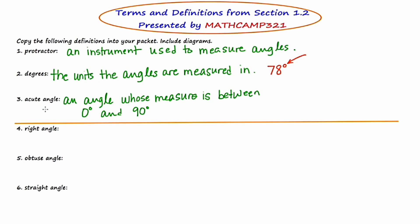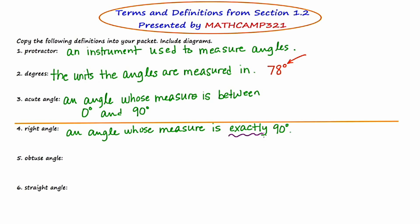Our next term is a right angle. A right angle is an angle whose measure is exactly 90 degrees. The keyword here is exactly — it must be precisely 90 for it to be a right angle.